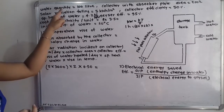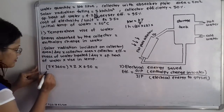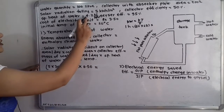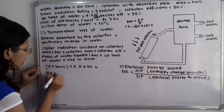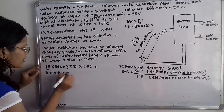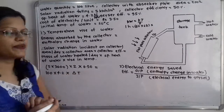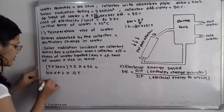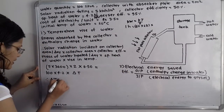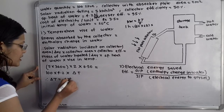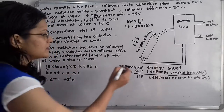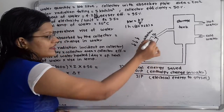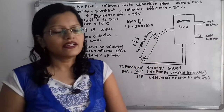The water quantity is given as 100 litres. When we calculate this, we get the value of delta T equal to 43 degree Celsius. That is the temperature difference between the inlet and outlet: delta T equals 43 degree Celsius.